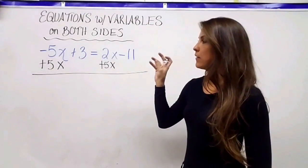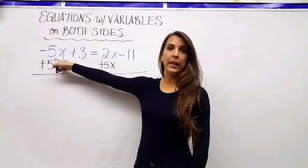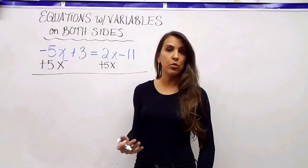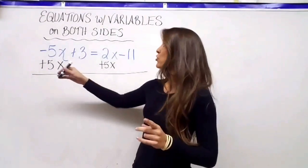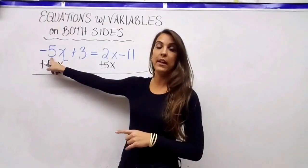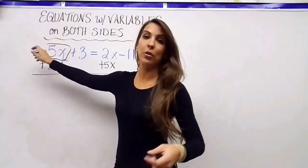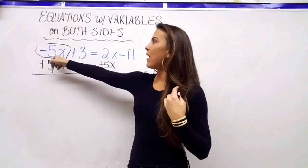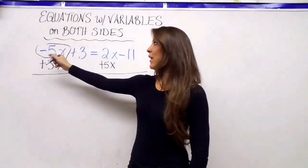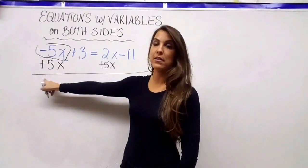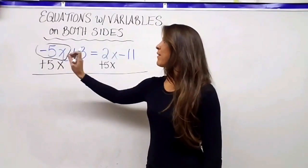Now let me address a common question I get: a lot of students ask why are we adding 5x instead of dividing by negative 5? You're used to dividing by the coefficient to isolate a variable, which is correct — but if I were trying to get rid of the negative 5 only, I would divide. Here I'm trying to get rid of the entire term negative 5x. Since negative 5x is not being multiplied by anything, the inverse is not division; the inverse of negative 5x is positive 5x.